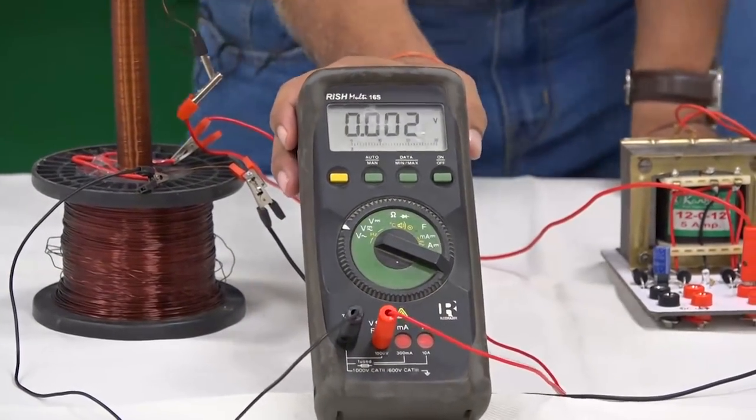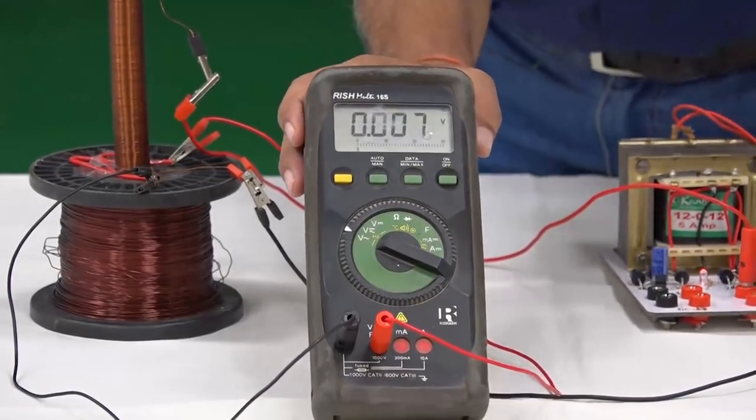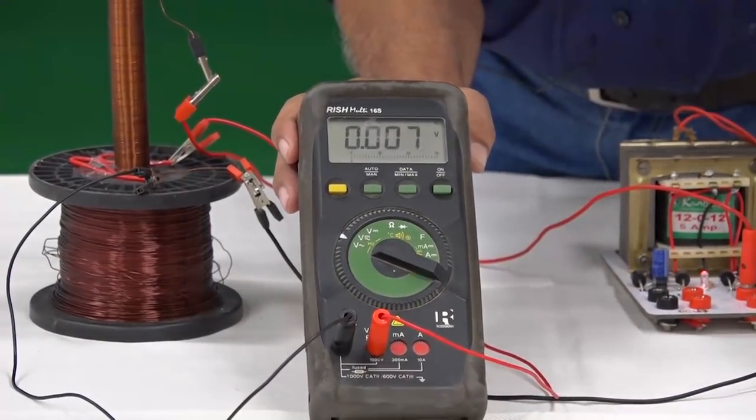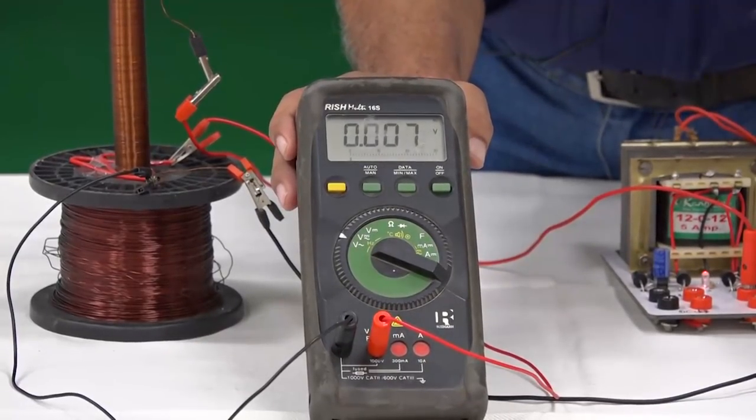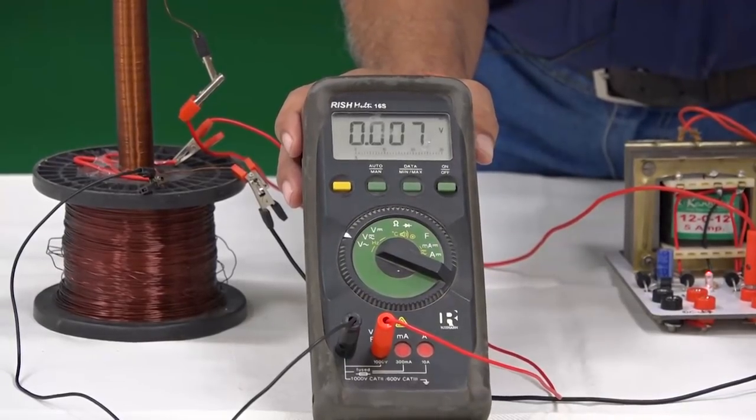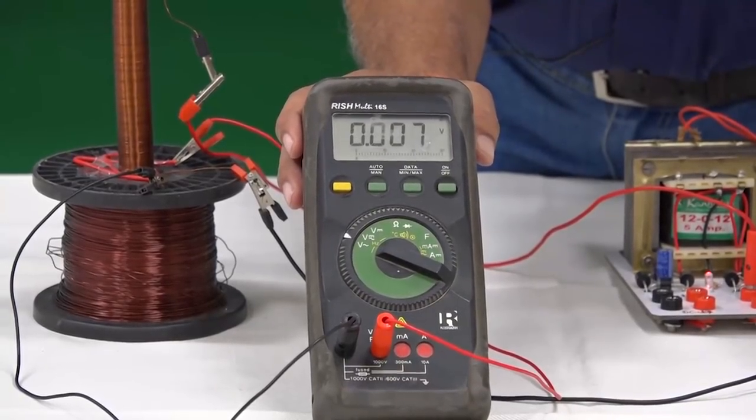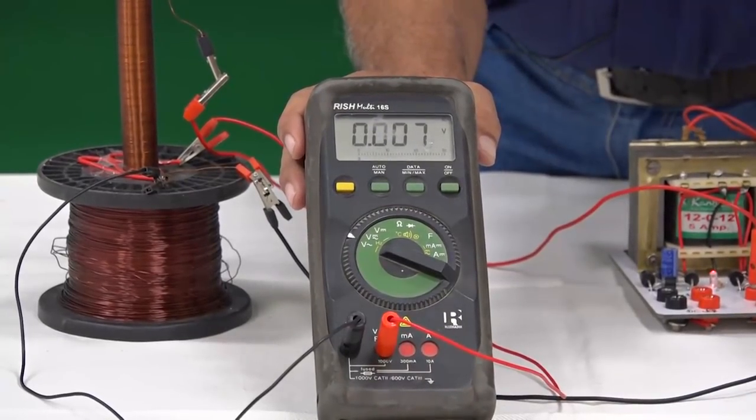I am switching on the power and you see the reading of this multimeter: 0.007, very small as compared to the previous case where it was 0.03 or so. It is 0.007 here.